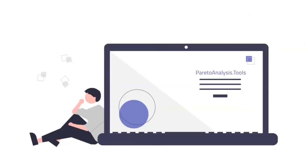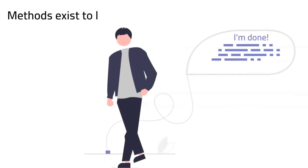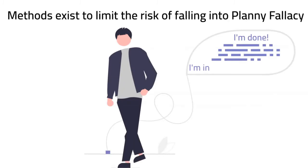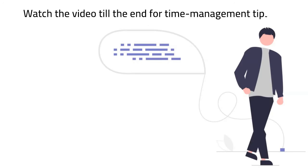Hofstadter's law applies to situations where complex tasks are involved. It falls into the planning fallacy phenomenon. If your goal is to finish something on time, you don't want Hofstadter's law to be proven true. Watch this video till the end and get a few tips that may help you avoid falling into this planning fallacy phenomenon.